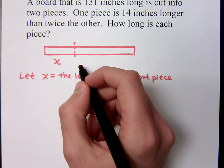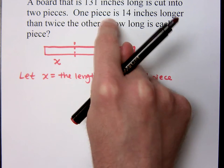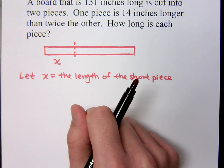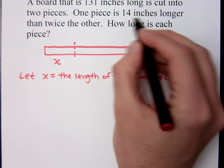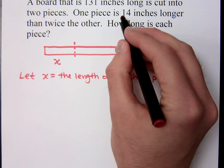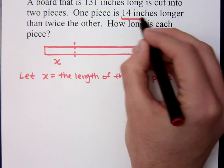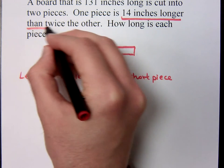How would you represent the length of the longer piece? And look what it says right here. What would you say? 14x. 14x? No. Hold on. Does it say one piece is 14 inches long? It would be 2x plus 14. 14 inches longer than twice the other.